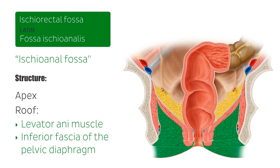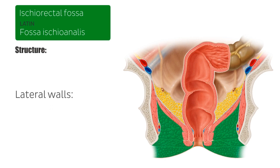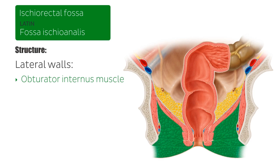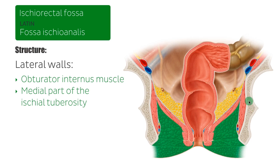The lateral walls of the ischiorectal fossae are formed superiorly by the obturator internus muscle and its fascia, and inferiorly by the medial aspect of the ischial tuberosity. We can see the obturator internus muscle just here, and also the ischial tuberosity. Of course, the roof and the lateral walls of the ischiorectal fossae meet at the apex, where the levator ani and the obturator internus muscles intersect.